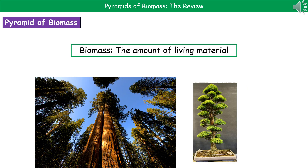The second type of pyramid is the Pyramid of Biomass. When we talk about biomass, it's the amount of living material that's present. So even if we're talking about a single tree, the biomass is going to be very different — for example, a giant sequoia has a huge biomass in comparison to the bonsai tree on the right.